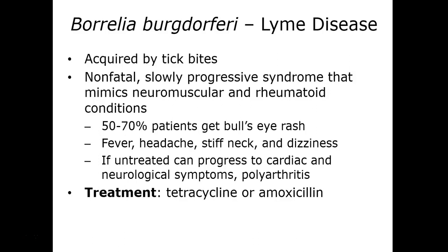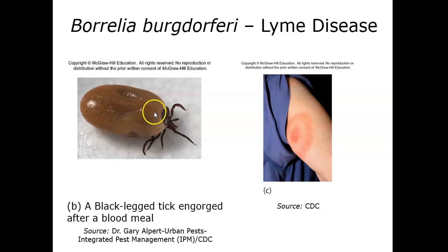Lyme disease is a non-fatal but slowly progressive syndrome with neuromuscular and arthritic complications. The first stage is noted by the presence of a bullseye rash known as erythema migrans in the majority of patients. The secondary stage is characterized by fever, headache, stiff neck, and dizziness. In the tertiary stage, cardiac and neurological symptoms appear, as well as arthritis. Here is an image of an engorged tick after a blood meal and the infectious bullseye rash known as erythema migrans.